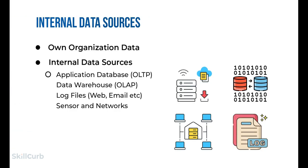Internal data sources — the most common is the organizational internal database, where data is already collected, refined, clean, and pre-processed. Other internal data sources include OLTP (online transaction processing) data containing transactional information that can be modified, updated, or deleted; data warehousing data used for analytical reports; log files recording events such as IP addresses and locations; and sensors and networks under the Internet of Things (IoT), which generate a very large amount of data in very little time.